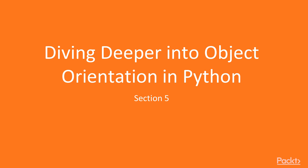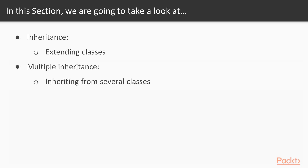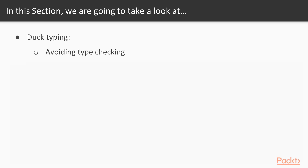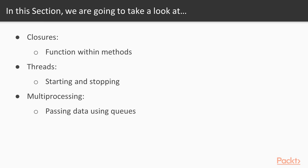Hello and welcome to section 5, in which we will be diving deeper into object orientation with Python. In this section we will start using inheritance to extend our classes, then look into multiple inheritance, use polymorphism, duck typing which is a special feature of Python, mixins which are classes to add additional functionality, class methods to define additional constructors, the concept of closures compared to OOP classes, threads, and passing data using queues which is a concept of multiprocessing.